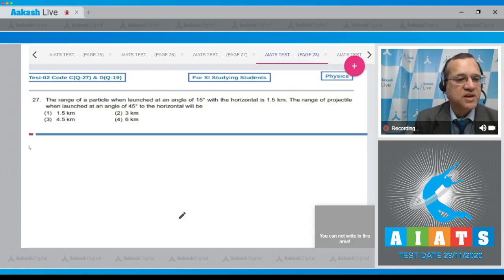Question number 27: The range of a particle when launched at angle 15 degrees with the horizontal is 1.5 kilometers. The range of the projectile when launched at an angle of 45 degrees to the horizontal will be? Now, the formula for the range is equal to u squared sine of 2 theta divided by g.